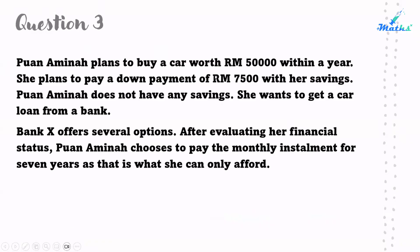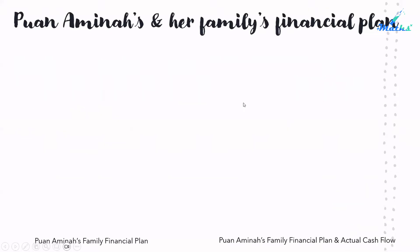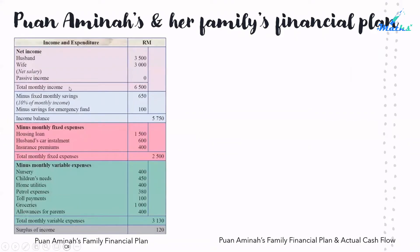Question 3: Juan Amina plans to buy a car worth $50,000 within a year. She plans to pay a down payment of $7,500 with her savings, but she does not have any savings currently and wants to get a car loan from a bank. Bank X offers several options. After evaluating her financial status, Juan Amina chooses to pay the monthly installment for seven years, as that is what she can only afford. Let's look at Juan Amina's family financial plan. Total monthly income is $6,500, minus fixed savings and savings for an emergency fund.